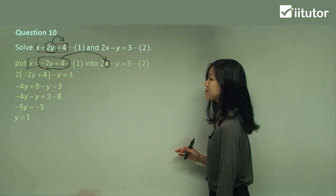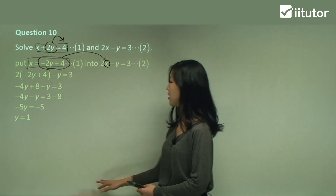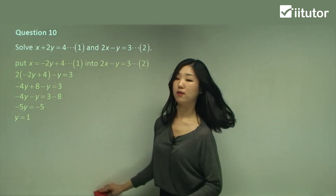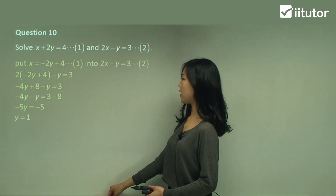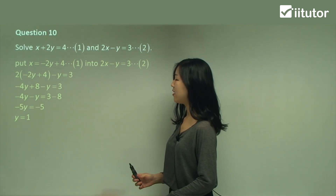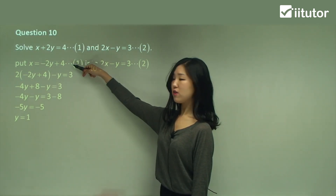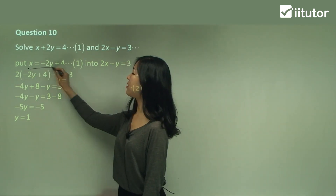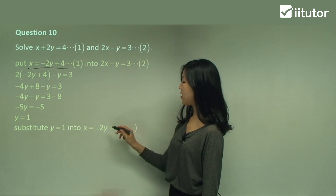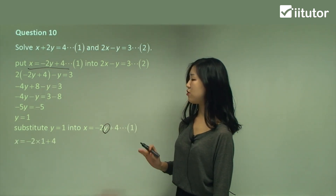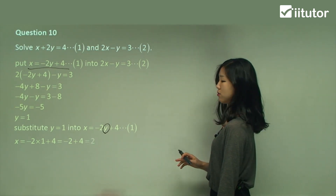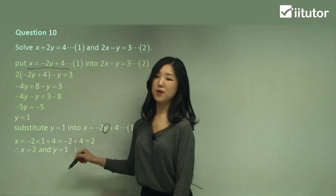Now I need to find x. I'll substitute y equals 1 into the rearranged equation 1 where x is the subject. So: negative 2 times 1 plus 4, which is negative 2 plus 4, which is 2. So x equals 2 and y equals 1. If nothing is the subject, make it the subject first and then use the substitution method.